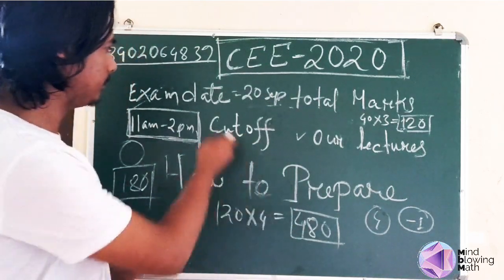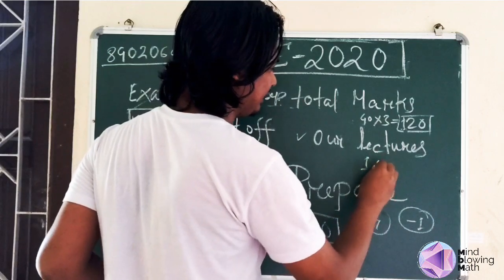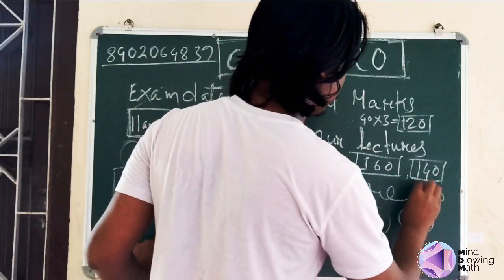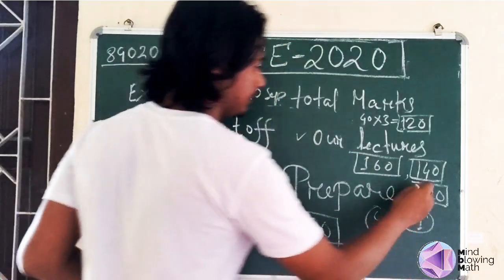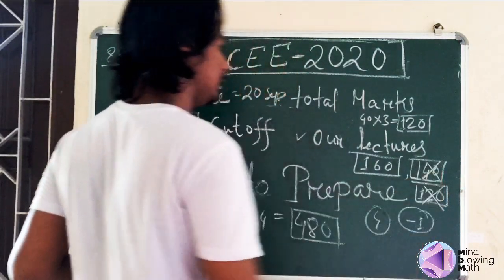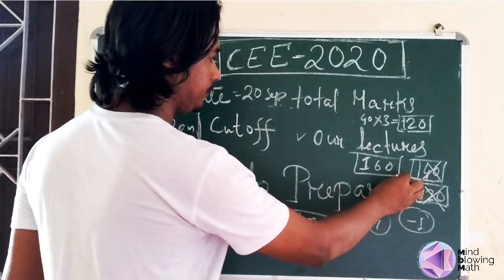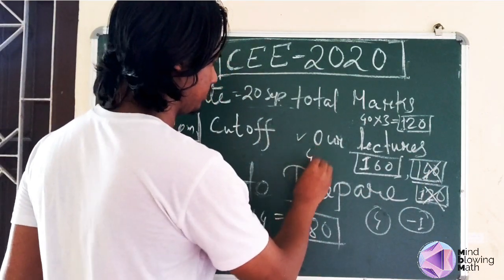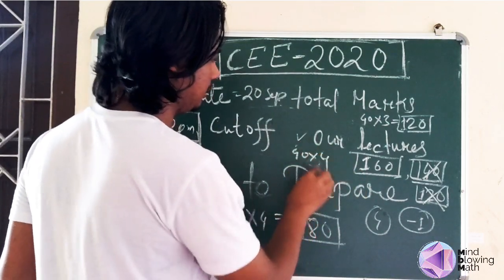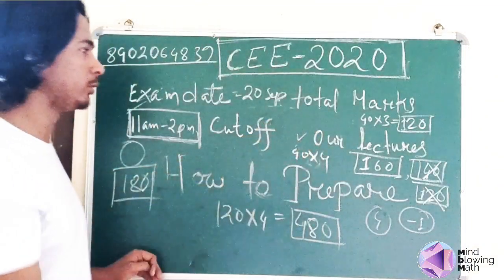Looking at last year's cut-off: the AEC cut-off runs around 160 plus, another category around 140, and the overall cut-off was around 120. So if you target 160 marks, that is 160 divided by 4, meaning you need to correctly answer about 40 questions out of 120 — roughly divided across 3 subjects.